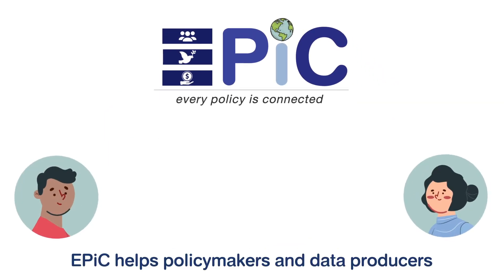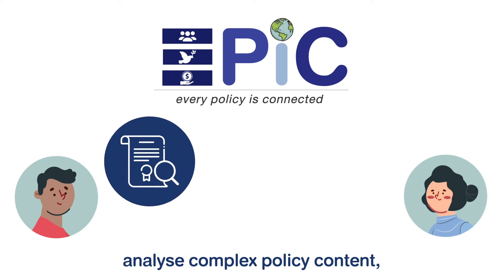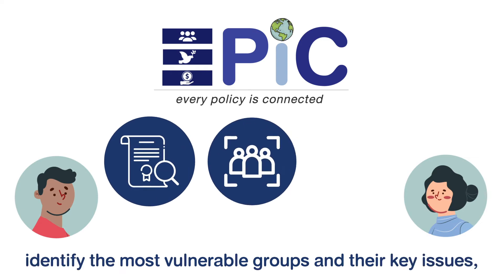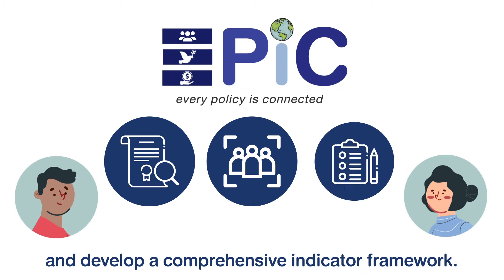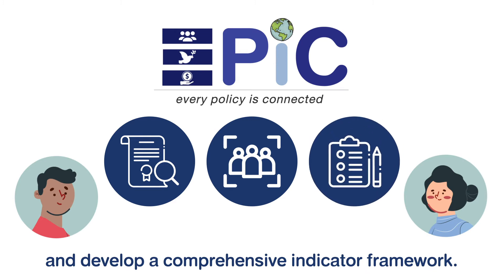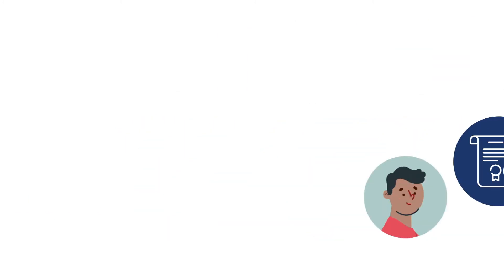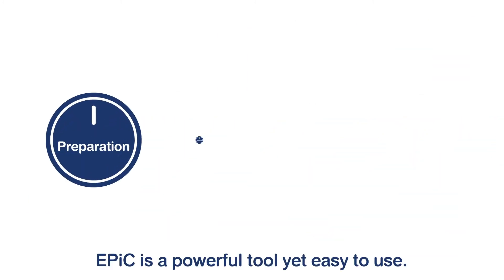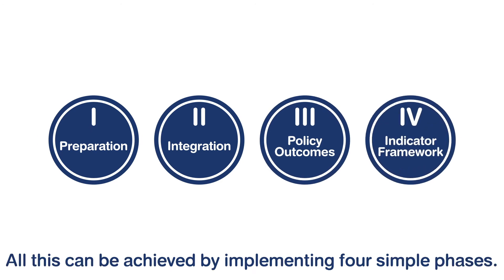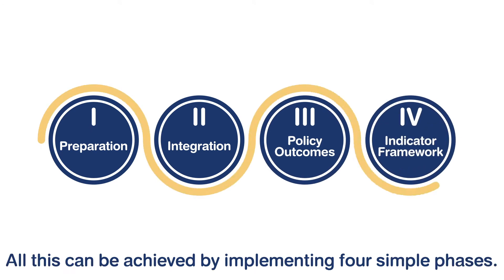EPIC helps policymakers and data producers analyze complex policy content, identify the most vulnerable groups and their key issues, and develop a comprehensive indicator framework. EPIC is a powerful tool yet easy to use. All this can be achieved by implementing four simple phases.